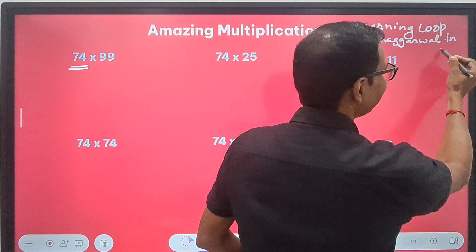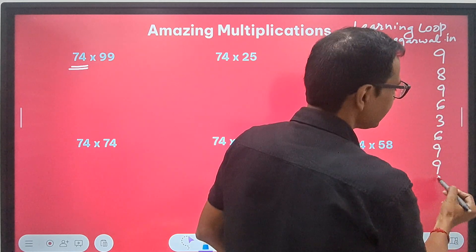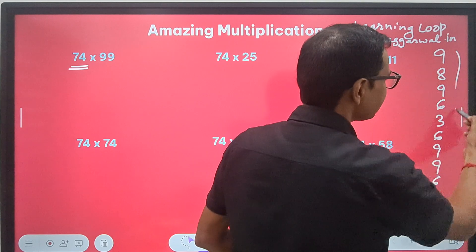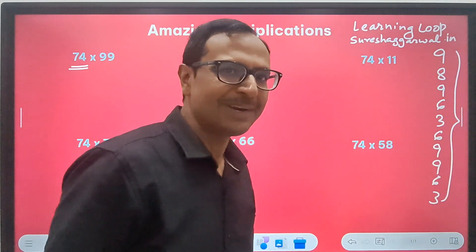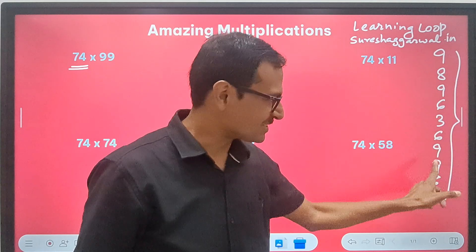I will write it vertically. 9896369963. There is mathematics involved in my number also. You can just try and find some mathematics in my number.